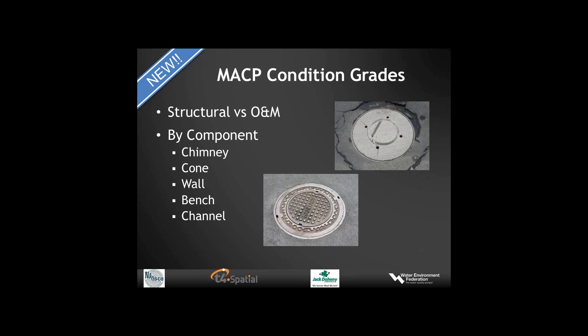Similar to PACP, we will differentiate condition grades now available in this new program between structural condition grades and O&M type condition grades. The condition grades for manholes or other structures will be divided by component in the appendix matrix for condition grades for structures. By component you'll have grades for chimney, cone, wall, bench, or channel. In most cases those will be the same, but in special cases where it makes sense, condition grades will be elevated depending on the type of defect in a structure and where it's located.